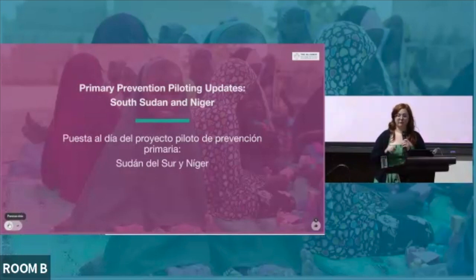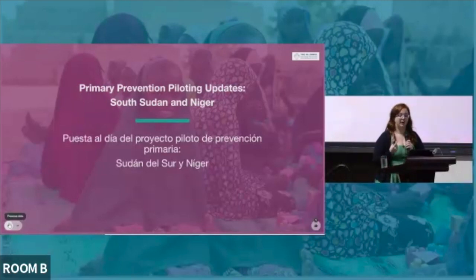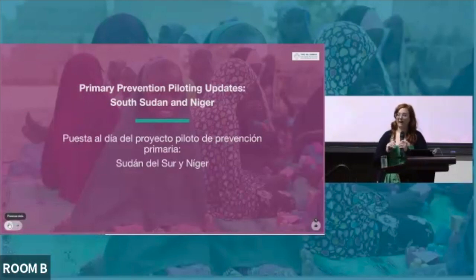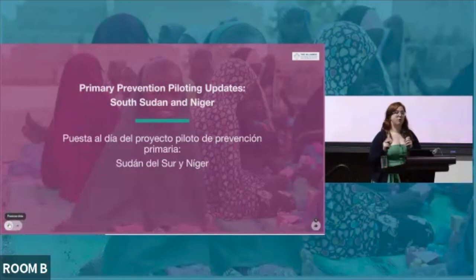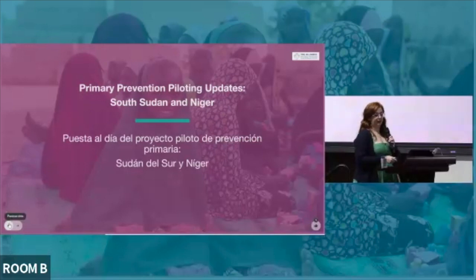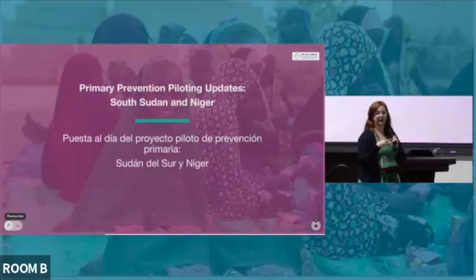Evidence generated from these pilots will feed into advocacy efforts to promote preventive approaches both within our community and across other sectors and donors. We selected two countries for piloting: Niger and South Sudan. We were specifically looking for contexts with strong multi-sectoral programming and strong coordination mechanisms. So far we have covered preparedness, needs assessment, design and planning, and implementation and monitoring.